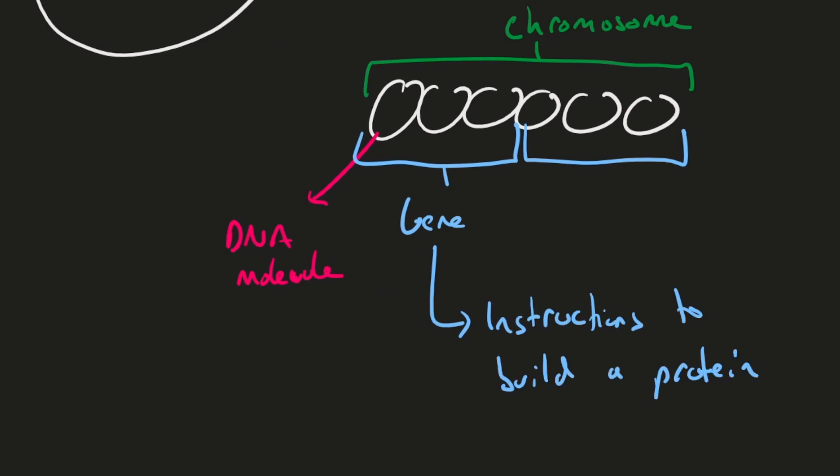What that means is your DNA tells you how to create proteins, and each different type of protein you make — those instructions are called genes — and it's all tightly wound up into this structure called a chromosome.